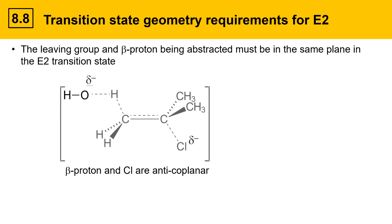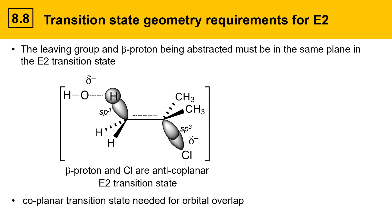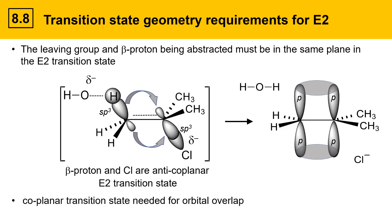As the base comes in, it approaches the beta proton and goes through the E2 transition state. Here we have a partially formed bond between the oxygen and hydrogen, a partially broken bond between hydrogen and carbon, a partially formed carbon-carbon double bond, and the leaving group chlorine is in the process of leaving, so that bond is also partially broken. This geometry is required for orbital overlap reasons — the coplanar transition state is needed for orbital overlap to transition from the alkyl halide to the alkene product. SP3 orbitals are shown for bonds that are breaking; SP3 hybrid orbitals also have a minor lobe that protrudes out the back side, and these overlap with the neighboring larger lobes to form the new pi bond. As the reaction proceeds, the SP3 hybridized orbitals transition into p orbitals in the product alkene. This overlap can only happen if these orbitals are aligned in the anti-coplanar geometry.